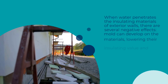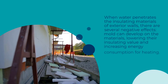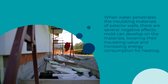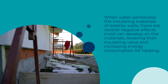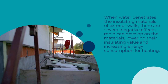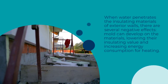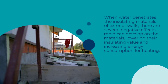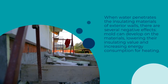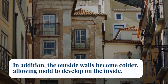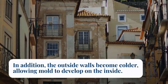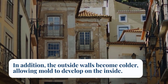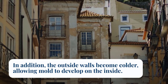When water penetrates the insulating materials of exterior walls, there are several negative effects: mold can develop on the materials, lowering their insulating value and increasing energy consumption for heating. In addition, the outside walls become colder, allowing mold to develop on the inside.